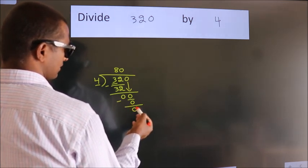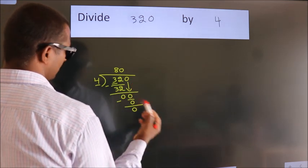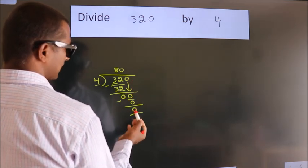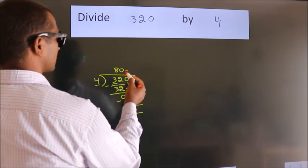After this, no more numbers to bring down, and we got remainder 0. So this is our quotient.